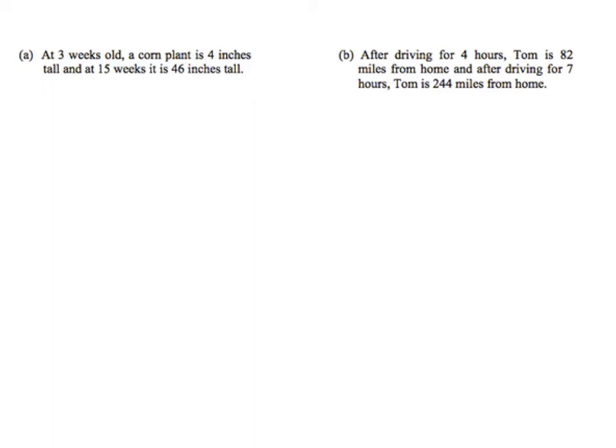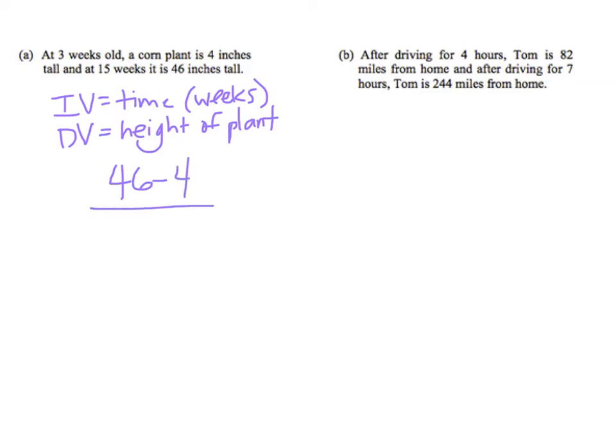So that's rate of change. Let's do a couple of examples with rate of change in another context. All right, at 3 weeks old, a corn plant is 4 inches tall, and at 15 weeks, it's 46 inches tall. So first, let's identify independent and dependent variable here. So the independent variable is the time in weeks, because the time is what is going to determine the height of the corn plant. And the dependent variable is the height of the plant. So it's change in dependent over change in independent. So it went from 4 to 46 inches, so we subtract, bigger minus smaller. And then we'll do later, minus earlier. So 46 minus 4 over 15 minus 3. 46 minus 4 is 42. 15 minus 3 is 12.